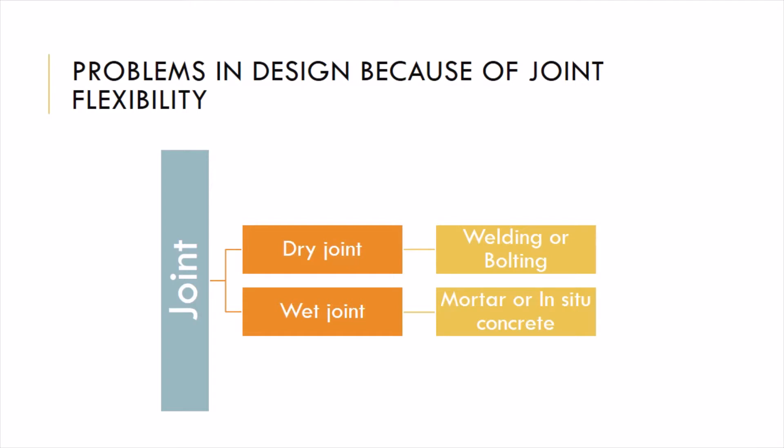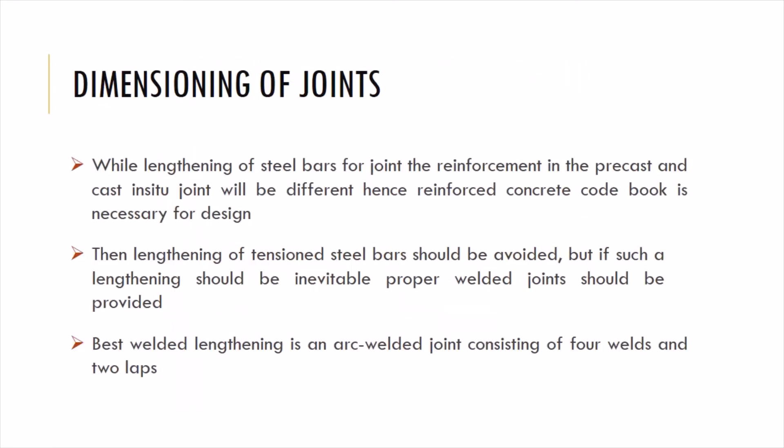We are going to discuss the topic: problems in design because of joint flexibility. A joint is where we connect two members. It is done based upon a dry or wet method. For a dry method, we go for welding or bolting; for a wet method, we go for mortar or in-situ concrete.